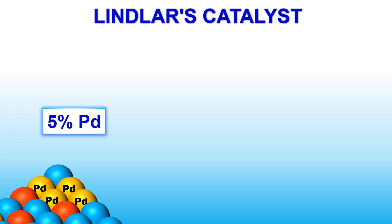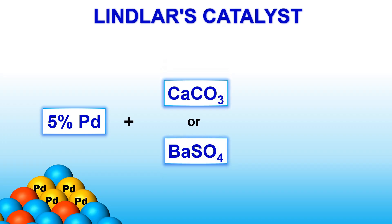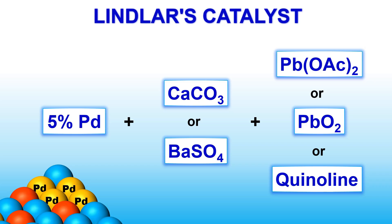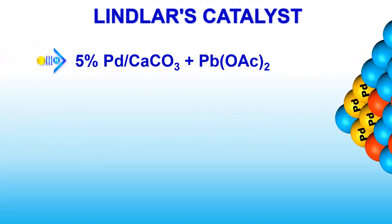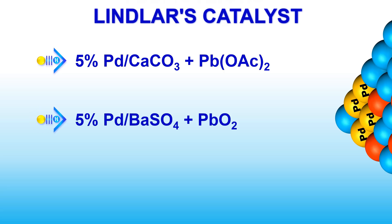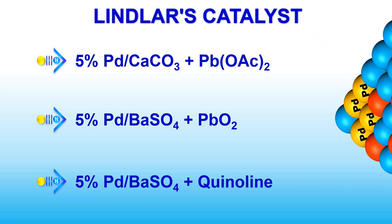Lindlar's catalyst is a combination of 5% palladium metal supported on an inert base like calcium carbonate or barium sulphate. It is then poisoned with compounds such as lead salts or quinoline to moderate the catalytic activity, ensuring that the reaction stops at the alkene stage. The most commonly used combinations include 5% palladium on calcium carbonate poisoned with lead acetate, 5% palladium on barium sulphate poisoned with lead dioxide, or 5% palladium on barium sulphate plus quinoline.